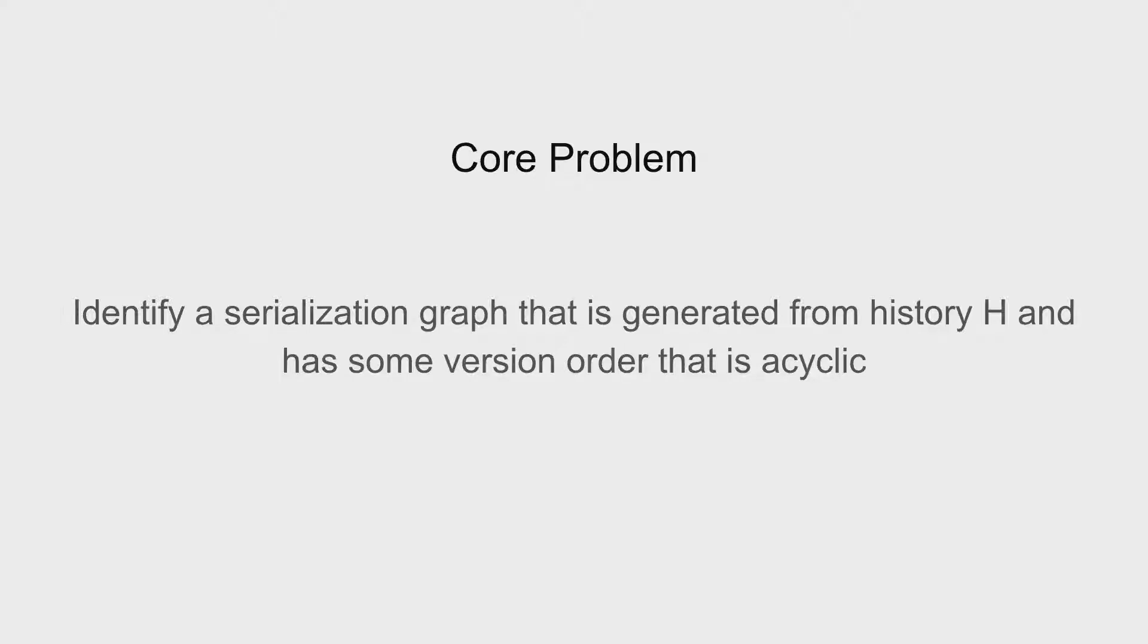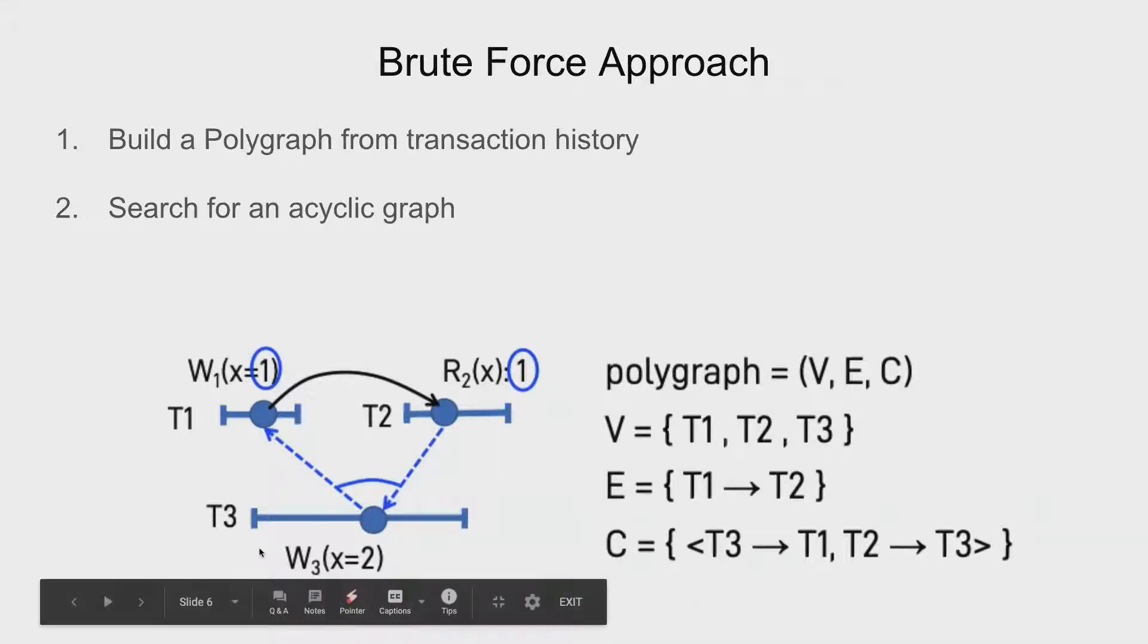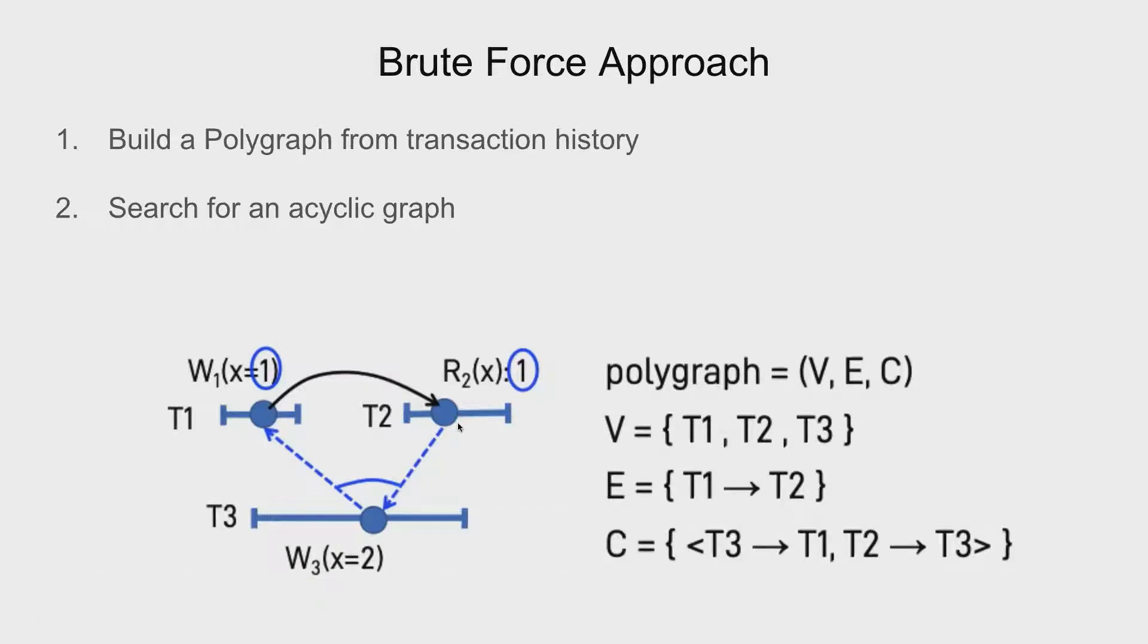So the first approach that the author mentioned in the paper is the brute force approach. It also serves as a good intuition for what we are trying to do here. So given a transaction history for T1 which involved three transactions T1, T2 and T3, we build a polygraph from that transaction history and then we search for an acyclic graph inside of it. A polygraph encodes the uncertainty in the order in our graph. So here we have three transactions T1, T2 and T3 and we know that T1 has happened before T2 but we have another transaction T3 for which we do not know when it might have happened before T1 or it might have happened after T2 and that is a set of constraint.